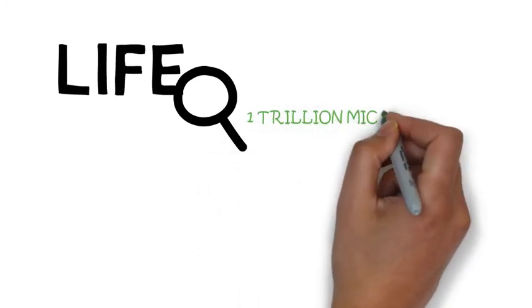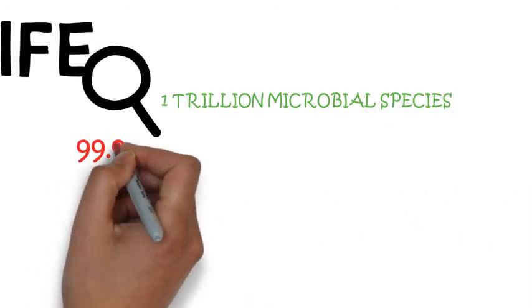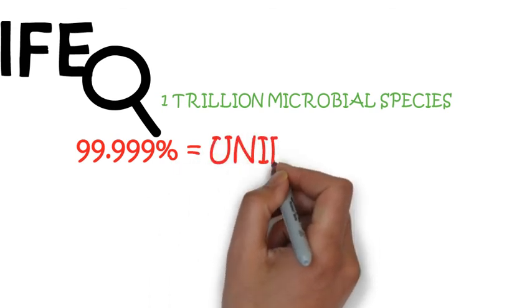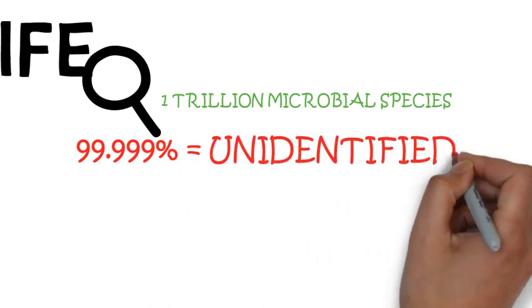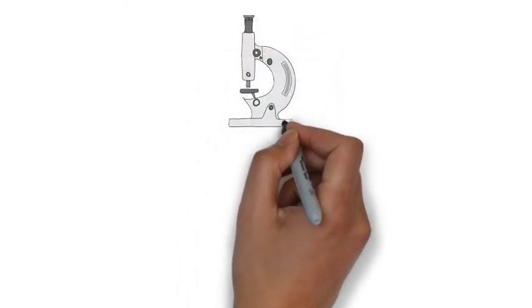Scientists believe that earth is home to 1 trillion microbial species and 99.999% of these species are yet to be identified. Thus, there is a lot we don't know yet and microbiologists still have a lot to explore.